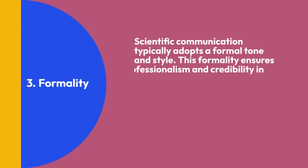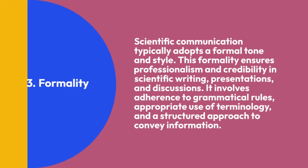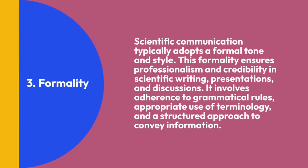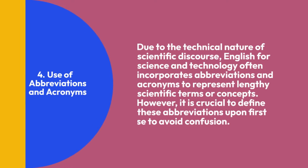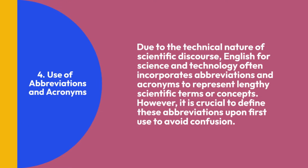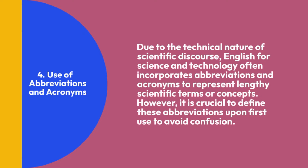Third, Formality: Scientific communication typically adopts a formal tone and style. This formality ensures professionalism and credibility in scientific writing, presentations, and discussions. It involves adherence to grammatical rules, appropriate use of terminology, and a structured approach to convey information. Fourth, Use of Abbreviations and Acronyms: Due to the technical nature of scientific discourse, English for science and technology often incorporates abbreviations and acronyms to represent lengthy scientific terms or concepts. However, it is crucial to define these abbreviations upon first use to avoid confusion.